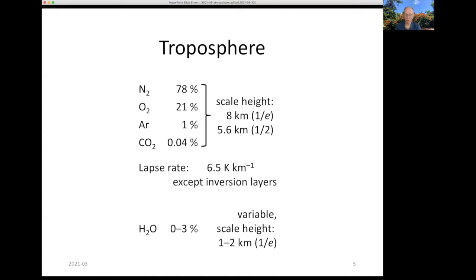Water vapor is a very important constituent for submillimeter astronomy because it absorbs cosmic radiation very efficiently in the submillimeter and far infrared. But it's variable — its concentration is variable — and it has a much smaller scale height than the rest of the atmosphere, generally one to two kilometers.